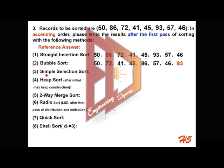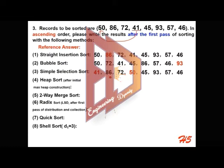The next method is simple selection sort. This one is easy to implement — locate which element is the smallest, then exchange it with the first element. All the others will just remain in place. This is the result after the first pass of simple selection sort.